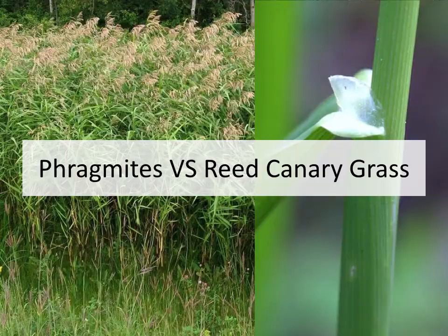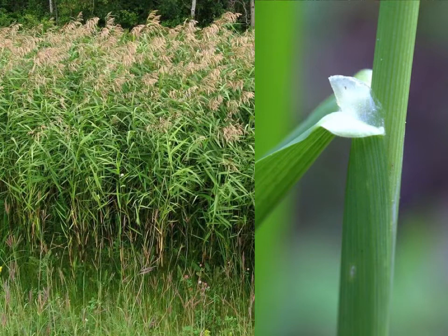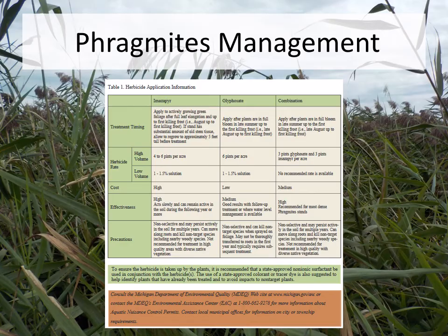Another lookalike is reed canary grass, which is also an invasive. Reed canary grass does not grow anywhere near as tall, but in the spring the two grasses look similar. To tell them apart, you pull back the leaf and you will see a plastic-looking sheath on the ligule instead of the little hairs we discussed earlier.